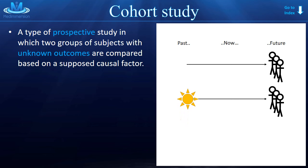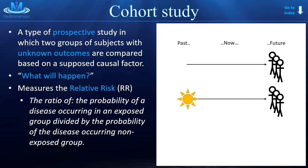You can see there's two groups here. We know that one of these groups has sun exposure and the other group doesn't. We're asking ourselves, what will happen in the future? What is going to happen to these two groups of people in 20 years? A cohort study is good for measuring the relative risk, which is the ratio of two probabilities.